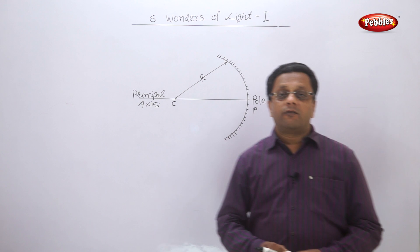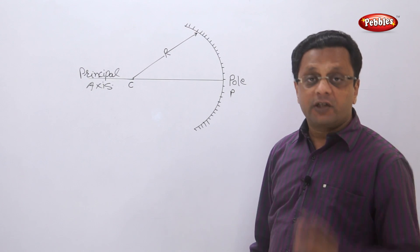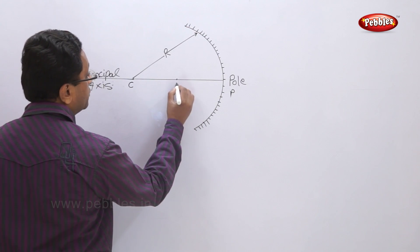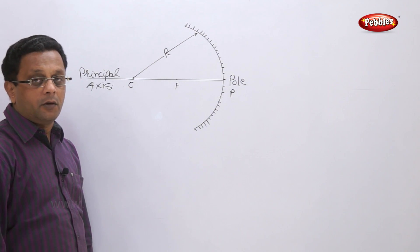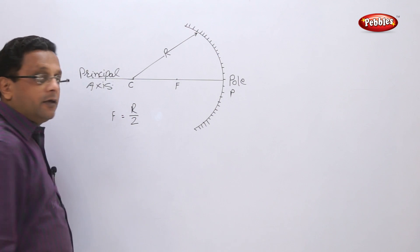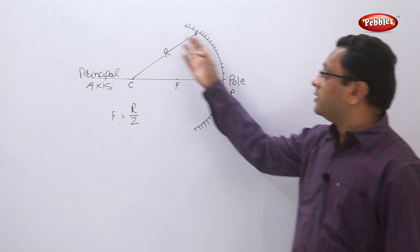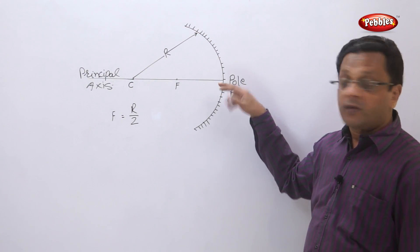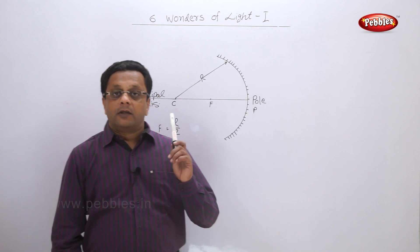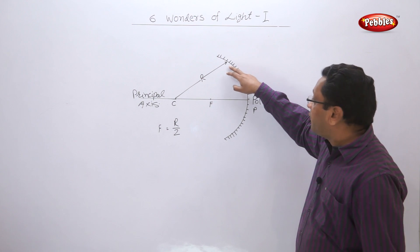There are two more terms: focal length and focus, or focal point. The focal length is generally half of the radius of curvature, so your focal point F will come somewhere at half the distance to the center of curvature. The focal length f is generally equal to R divided by 2.